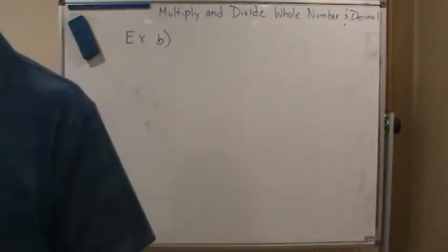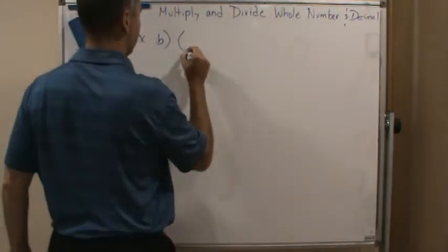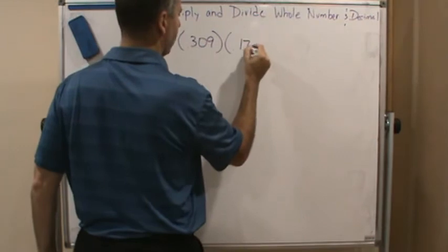So part B is .609. Is that right? So .309 times .17.